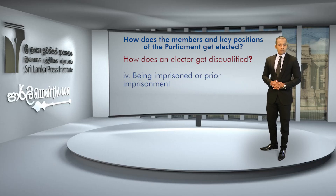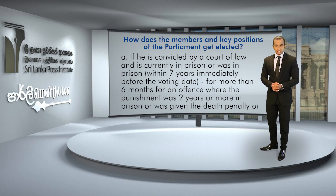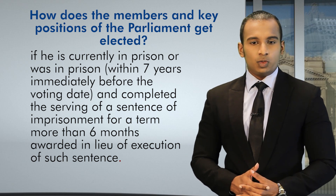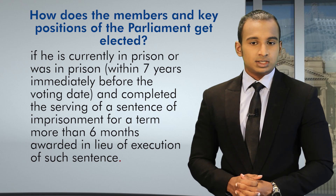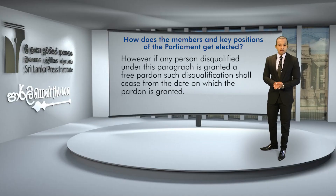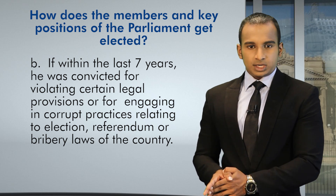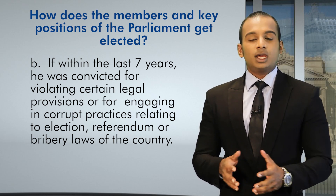Fourthly, being imprisoned or prior to imprisonment — if he is convicted by a court of law and is currently in prison, or was in prison within seven years immediately before the voting date, for an offence where the punishment was two years or more in prison, or was given the death penalty; or if he was in prison within seven years immediately before the voting date and completed serving a sentence of imprisonment for a term of more than six months awarded in lieu of execution of such sentence. However, if any person disqualified under this provision is granted a free pardon, such disqualification shall cease from the date on which the pardon is granted. Also, if within the last seven years a person was convicted for violating certain legal provisions or from engaging in corrupt practices relating to election, referendum, or bribery laws of the country, he will be disqualified.